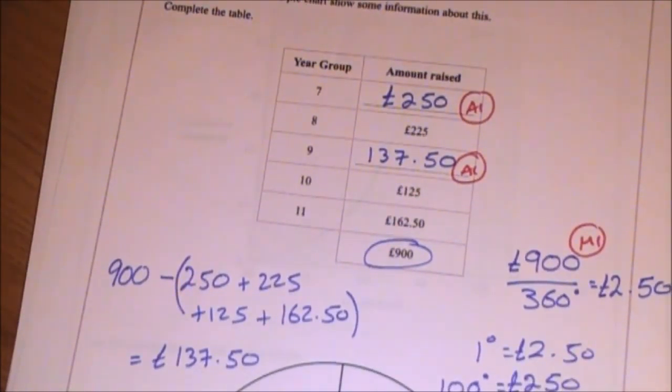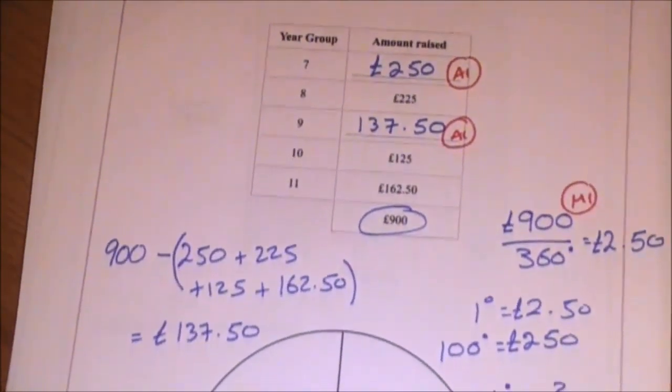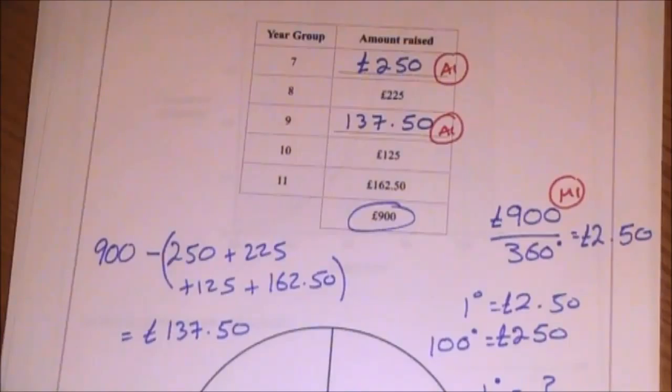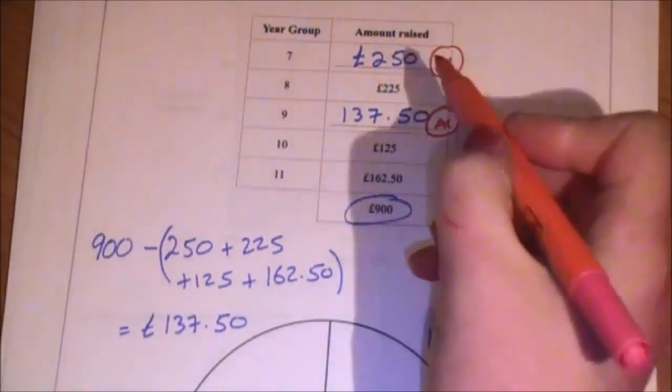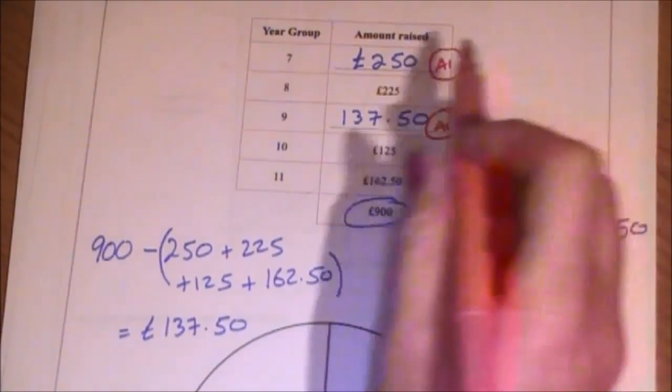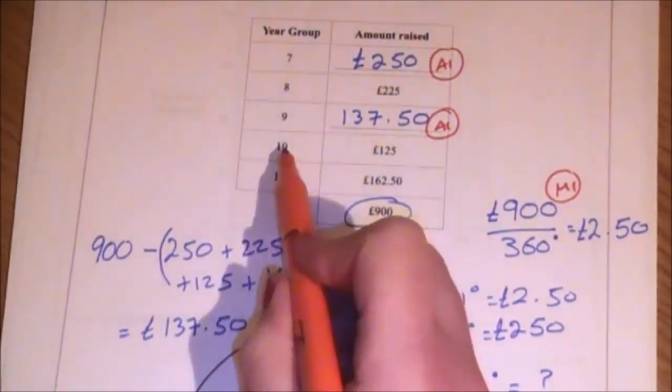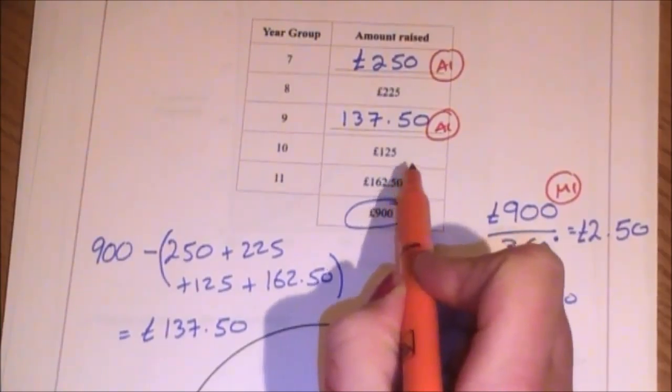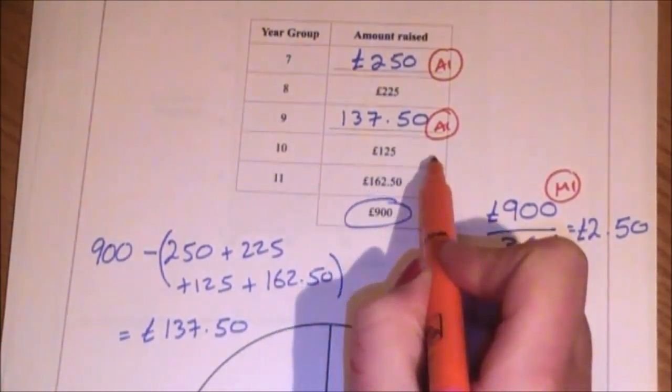Now, whilst I have emphasized they didn't want you to draw the pie chart, if they had wanted you to and you do not know how to draw a pie chart, I will show you how to calculate the size of the angle. Let's take year 10 for example. Year 10 raised £125.